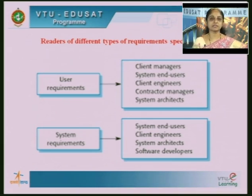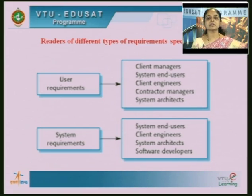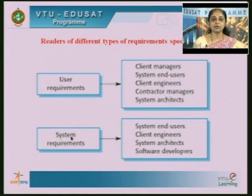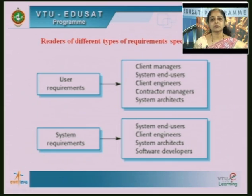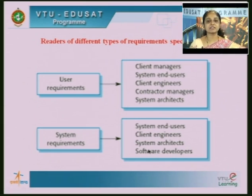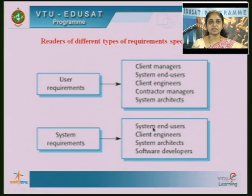System requirements, which contain detailed information about what the system should do, are definitely used by software developers. The software developer reads a system requirement rather than a user requirement because it is here that he decides what has to be designed next. The design of the software depends on the system requirements specification — this is a very strong input to the design document. Apart from the software developer, system architects, client engineers, and end users may also use the system requirements.